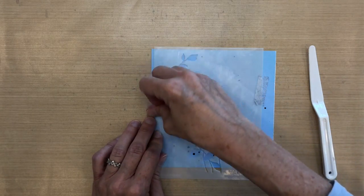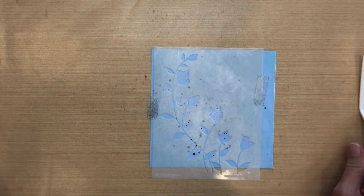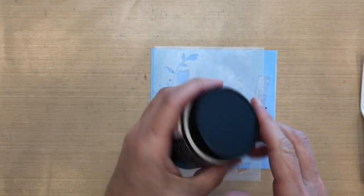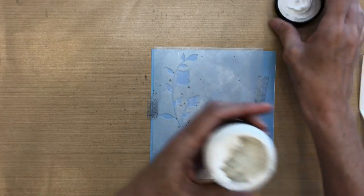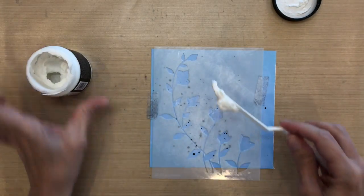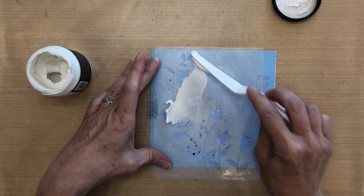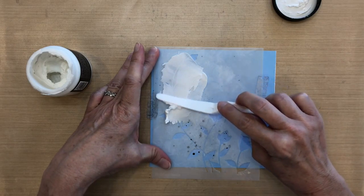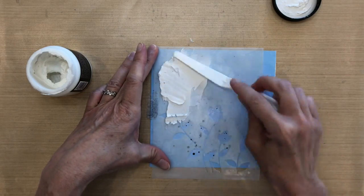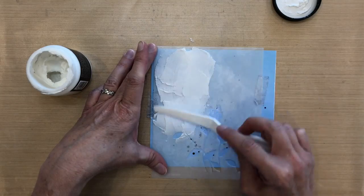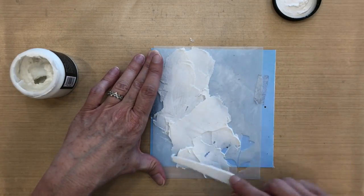I've got my palette knife and my paste here. I've got Wendy Vecchi just plain white paste. I usually get it on the back of my palette knife, the bottom part, and I'm spreading it like cake icing. I spend a lot of time spreading my embossing paste, so I fast forwarded this quite a bit.